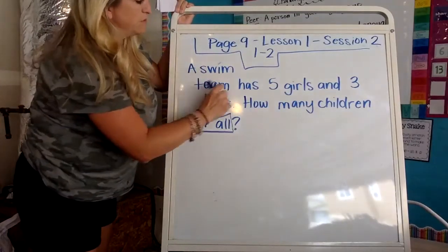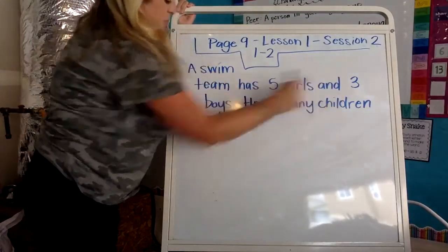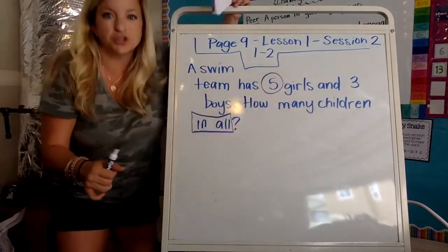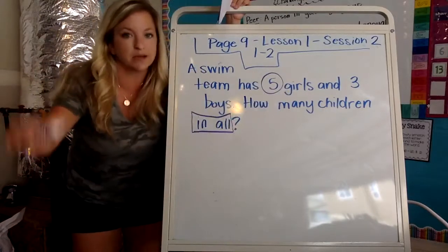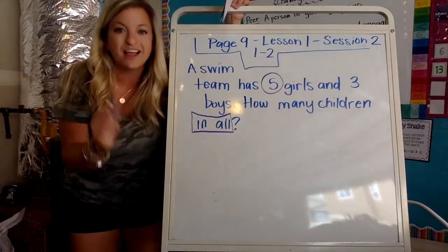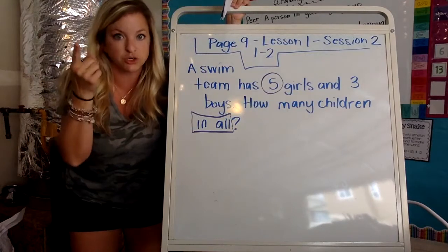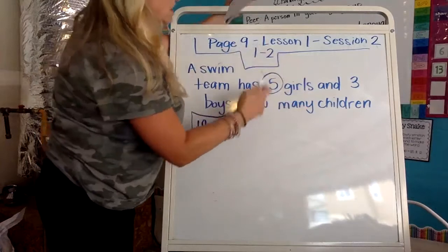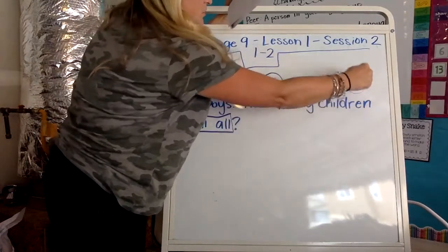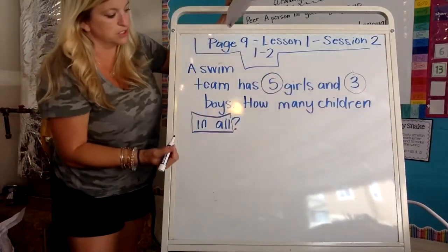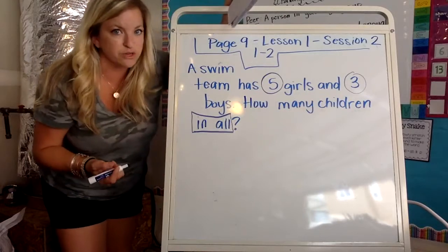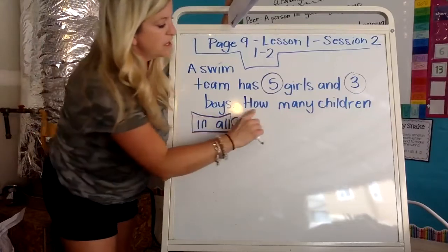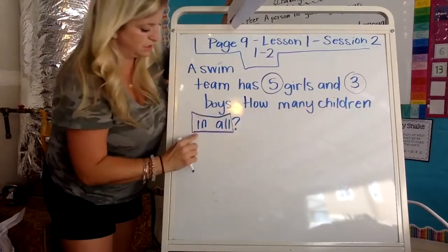So it says a swim team has five girls and three boys. How many children in all? What is important in that? The numbers. I'm going to circle the numbers five and three. I'm going to show you guys all the time. I'm going to make a circle with my fingers. If you remember yesterday, I also told you that in all is a clue that I'm going to add.